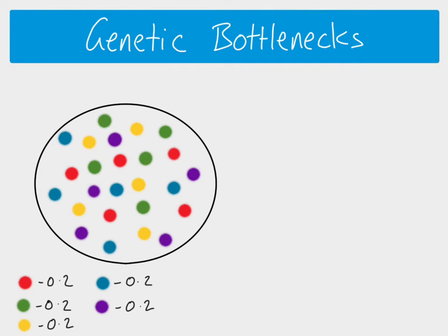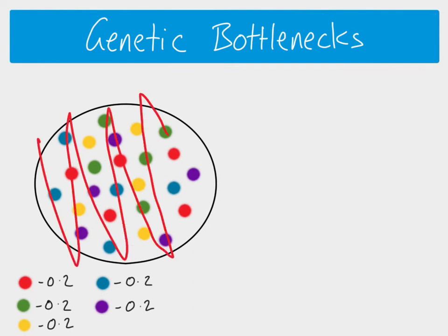A genetic bottleneck occurs when there is a sudden, significant decrease in population size. This could be due to a fire, a natural disaster, or — as has happened in animal populations — human hunting. A large proportion of the population is killed, so the majority of alleles belonging to those individuals are lost, and we are left with only a very small number of individuals. Each color represents both alleles and an individual.